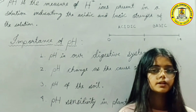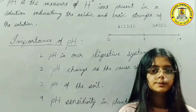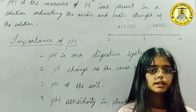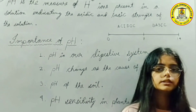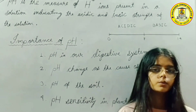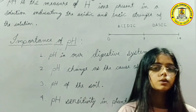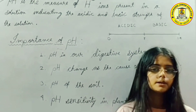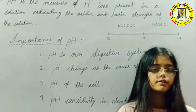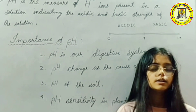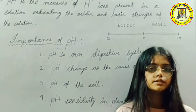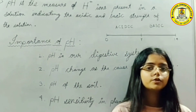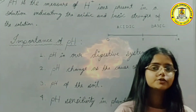Point number four: pH sensitivity in plants and animals. Our body works within the pH range of 7 to 7.8. When acid rain flows into rivers, the pH of water bodies drops below 7 and becomes acidic, making the survival of aquatic life difficult. That is all for the importance of pH. Thank you.